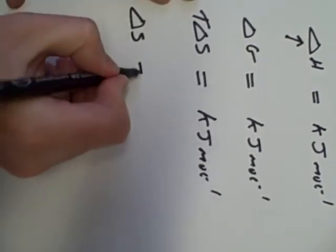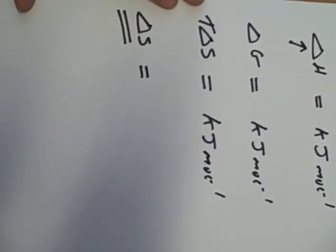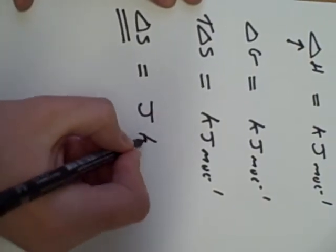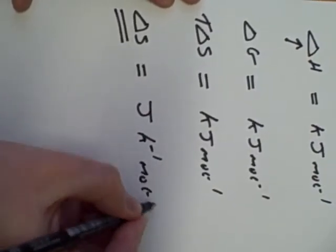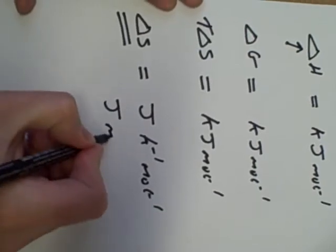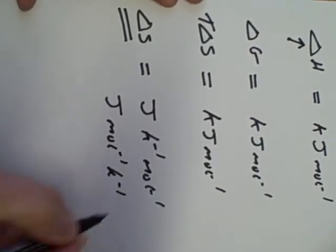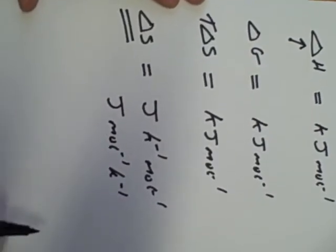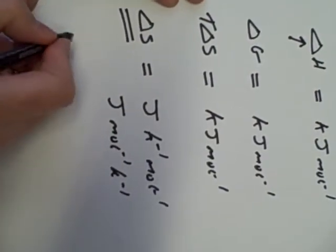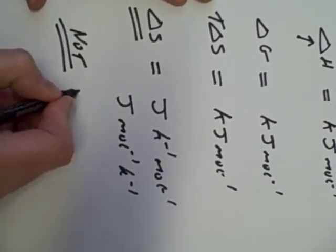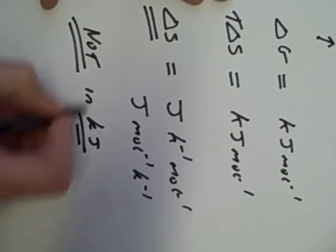The difference, the key one, is the change in entropy: joules per kelvin per mole. Sometimes it's written joules per mole per kelvin—doesn't matter, it's the same thing. Change in entropy is not in kilojoules; that's the important thing.